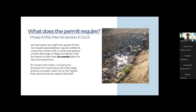Contact information including the procedure for reporting an illicit discharge needs to be included in each fleet vehicle used by field staff. They need to have procedures readily available for who to call, who to contact, and how to respond. Program managers: check that your staff have their procedures and know how to respond to an illicit discharge.